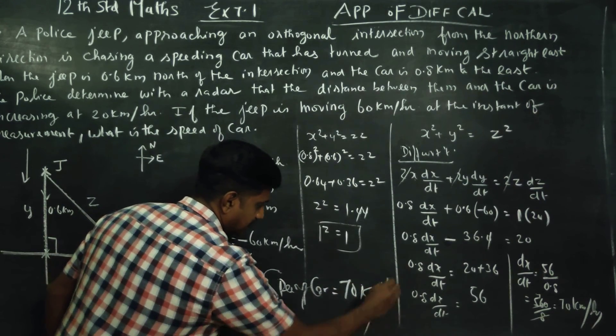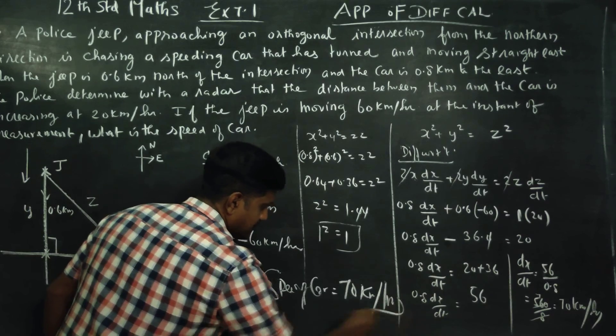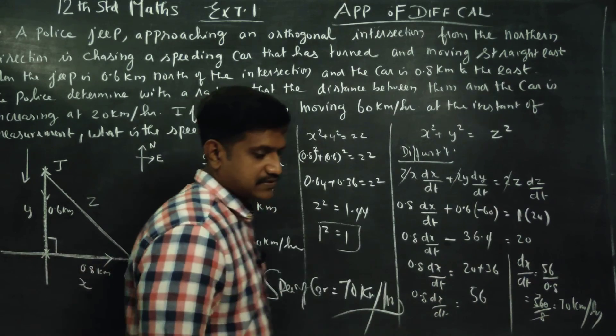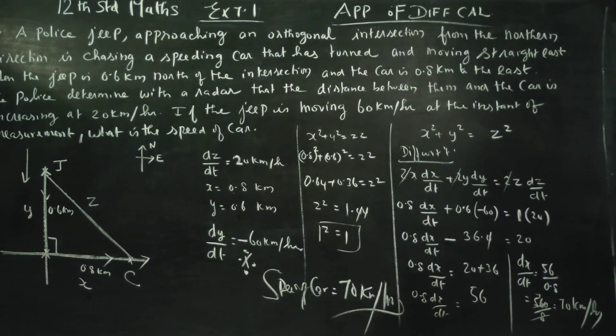The speed of the car is 70 km per hour. The answer is: 0.8(dx/dt) gives us the speed of the car. Thank you.